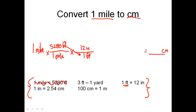The problem doesn't stop yet because I'm in inches and I need to convert into centimeters. I can see the trend: mile begins, mile goes below; I'm in feet, feet appears below; I'm in inches now, so I need inches on the bottom of the next factor. I'm left with one inch and 2.54 centimeters. The one inch goes on the bottom, and 2.54 centimeters goes on top. Inches are canceled out, and the problem is pretty much solved.